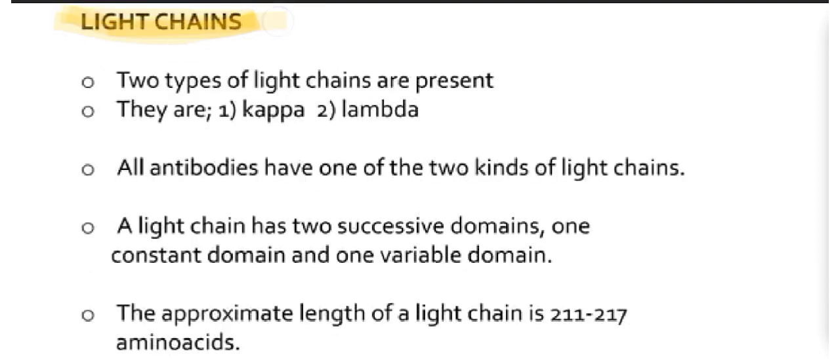We will see light chains. Two types of light chains are present: they are kappa and lambda. All antibodies have one of two kinds of light chains. Light chain is also called L chain.